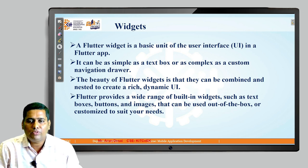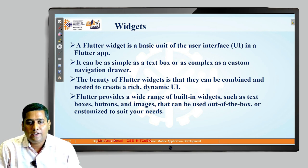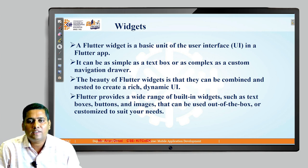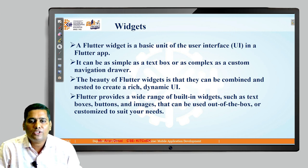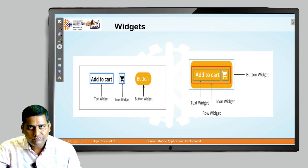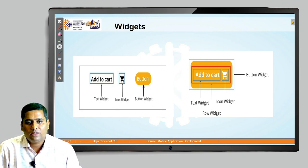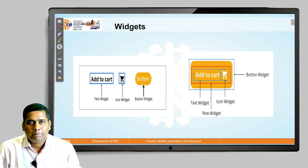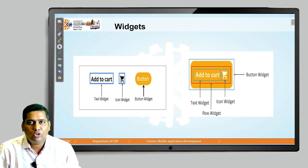Flutter provides a wide range of built-in widgets such as text widgets, buttons, images, text fields, and containers. On your screen you can see examples of widgets: the first image shows an 'add to cart' element, then we have an icon, then we have a button — those are basically called small widgets in Flutter.